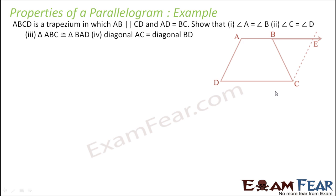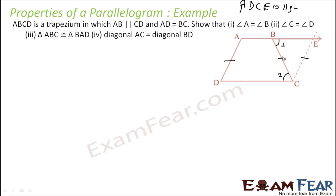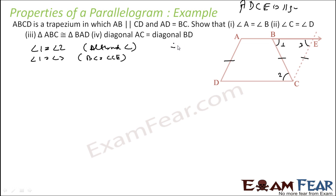Next: ABC is a trapezium in which AB is parallel to CD, and AD equals BC. Draw CE such that ADCE is a parallelogram. Since BC equals CE equals AD, triangle BCE is isosceles. Angle one equals angle two (alternate angles) and angle one equals angle three because BC equals CE.